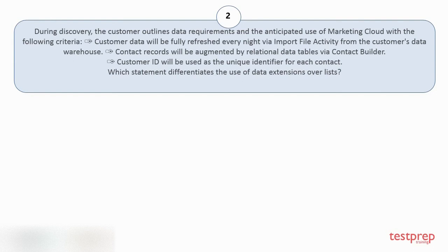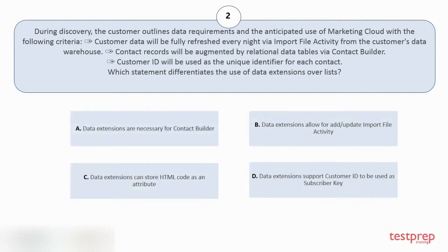Question number two: During discovery, the customer outlines data requirements and the anticipated use of Marketing Cloud with the following criteria. One: customer data will be fully refreshed every night via import file activity from the customer's data warehouse. Two: contact records will be augmented by relational data tables via Contact Builder. Three: customer ID will be used as the unique identifier for each contact. Which statement differentiates the use of data extensions over lists? Options: A) Data extensions are necessary for Contact Builder. B) Data extensions allow for add or update import file activity. C) Data extensions can store HTML code as an attribute. D) Data extensions support customer ID to be used as subscriber key.